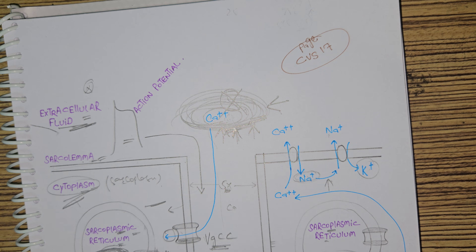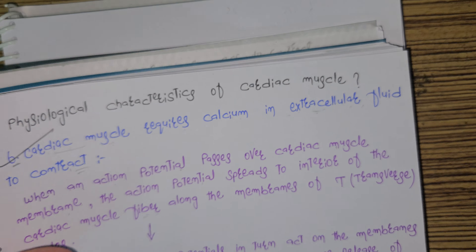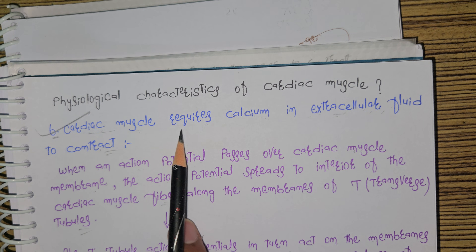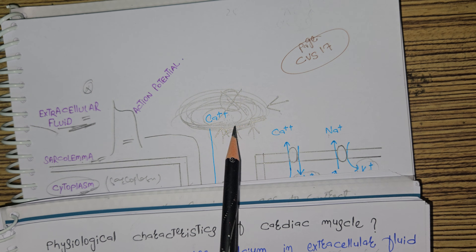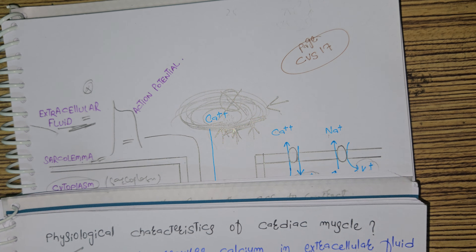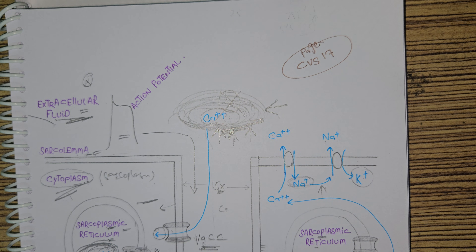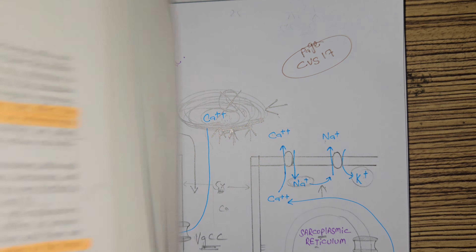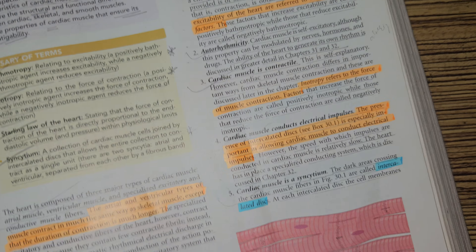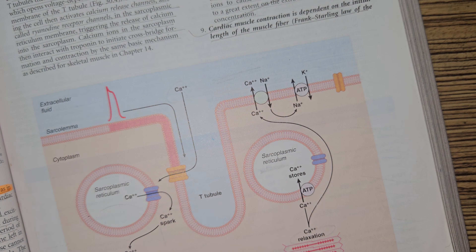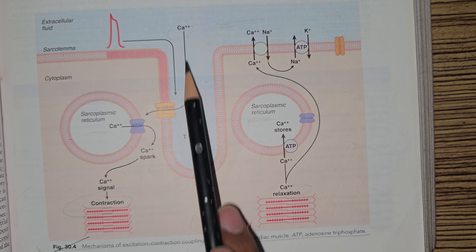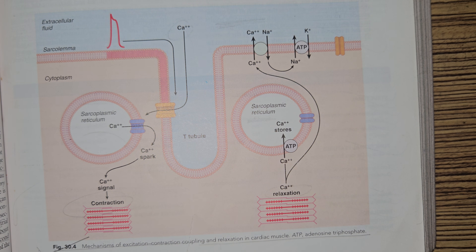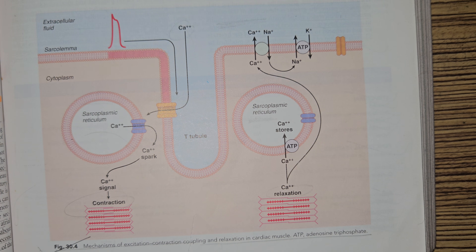So this is physiological property number 6: cardiac muscle requires calcium in the extracellular fluid to contract. This is that very important calcium — if this calcium is not present, the heart will stop beating. In the diagram, the action potential comes, calcium goes out through ryanodine receptors, and calcium comes in from the extracellular fluid through these voltage-gated calcium channels.